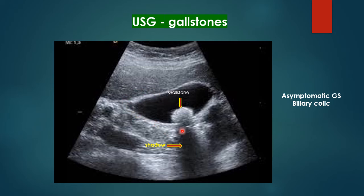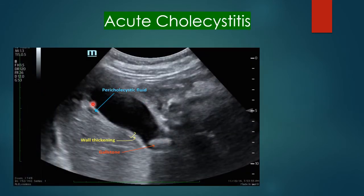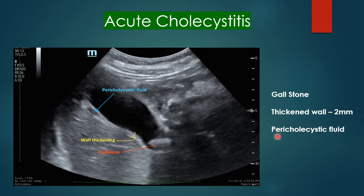An ultrasound showing a gallbladder with a hypoechoic shadow casting a posterior shadow is diagnostic of a gallstone within the gallbladder. Features of an acutely inflamed gallbladder on ultrasound include: a stone in the neck of the gallbladder, thickened gallbladder wall of more than 2 millimeters, and pericholecystic edema fluid. These three features — gallstone, thickened wall, and pericholecystic fluid — suggest the gallbladder is acutely inflamed.